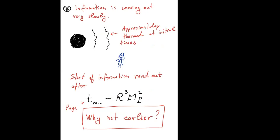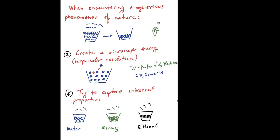The second mystery is information. These objects store an enormous amount of information because they have huge microstate entropy, and information takes a very long time to come out, despite the fact that the object radiates energy in the form of Hawking radiation. Everybody agrees more or less on a timescale called Page's time, which is a lower bound on the timescale after which we can start resolving the information. And this timescale is considered mysterious — why this time, and why not earlier?